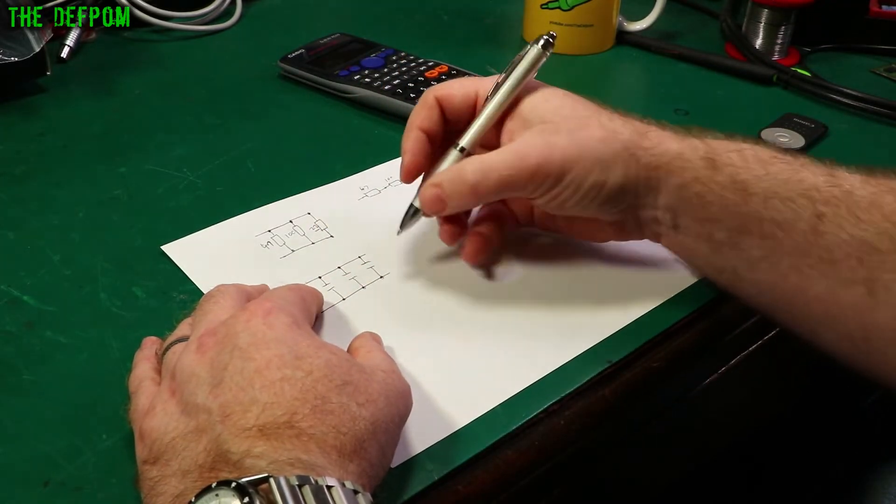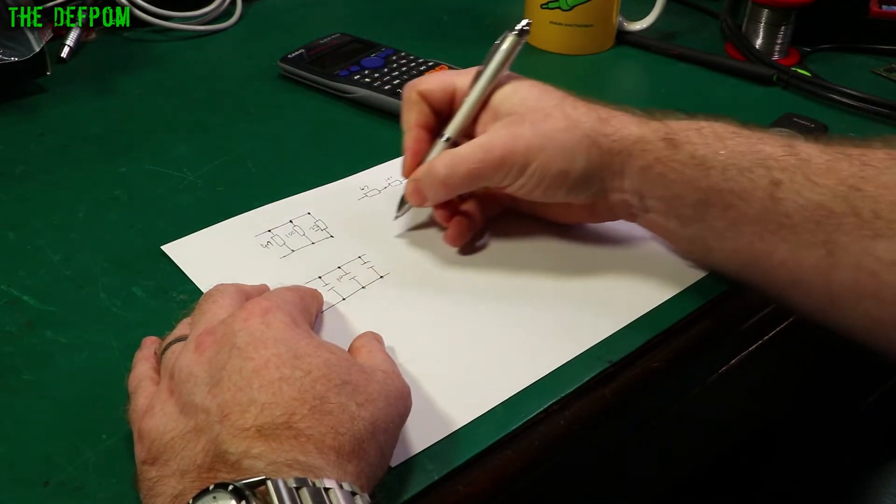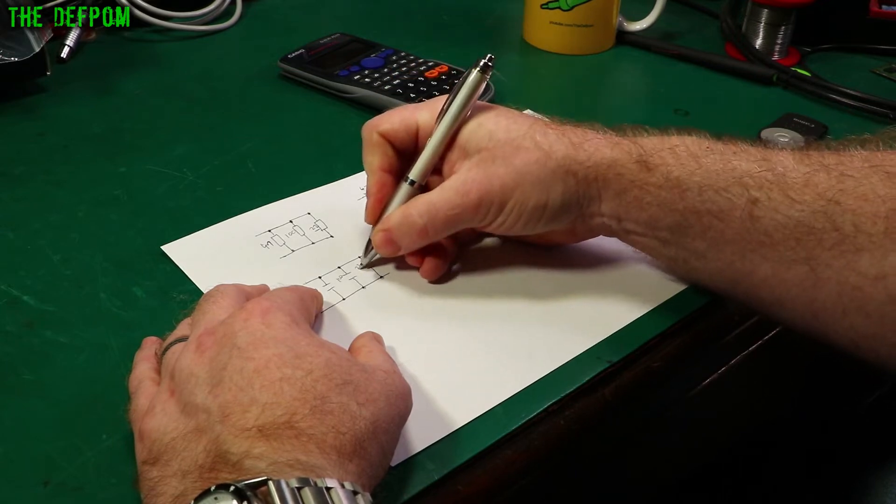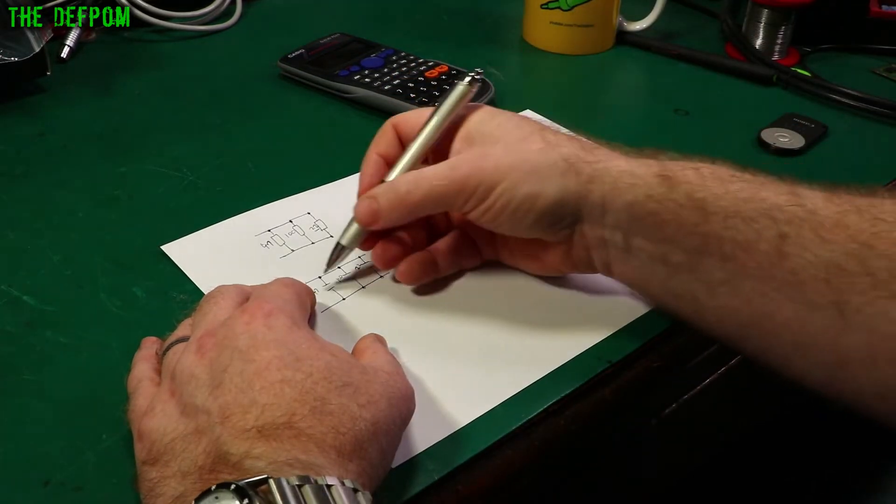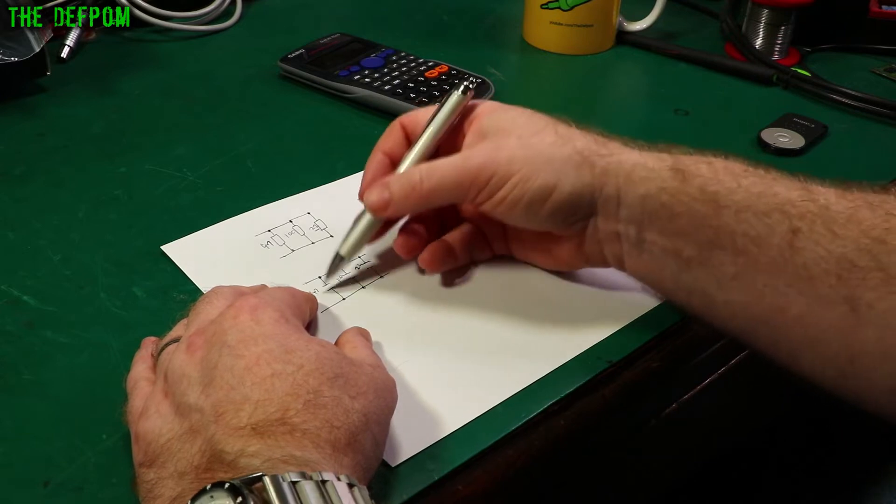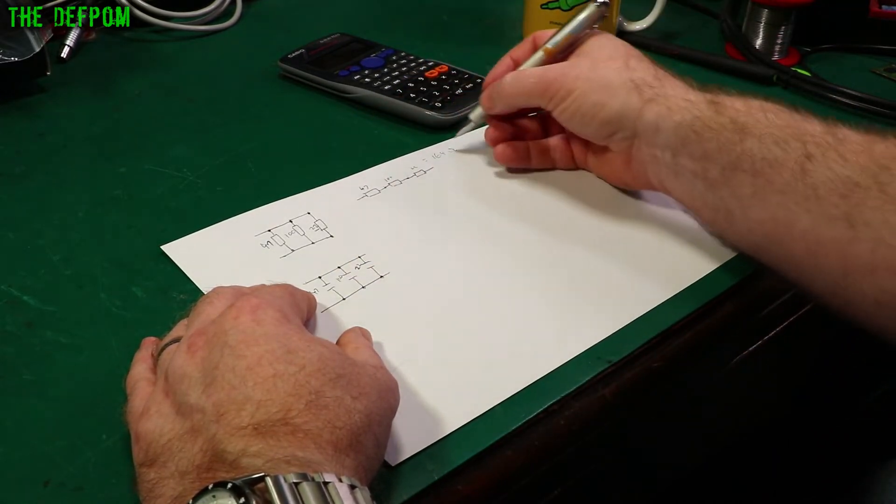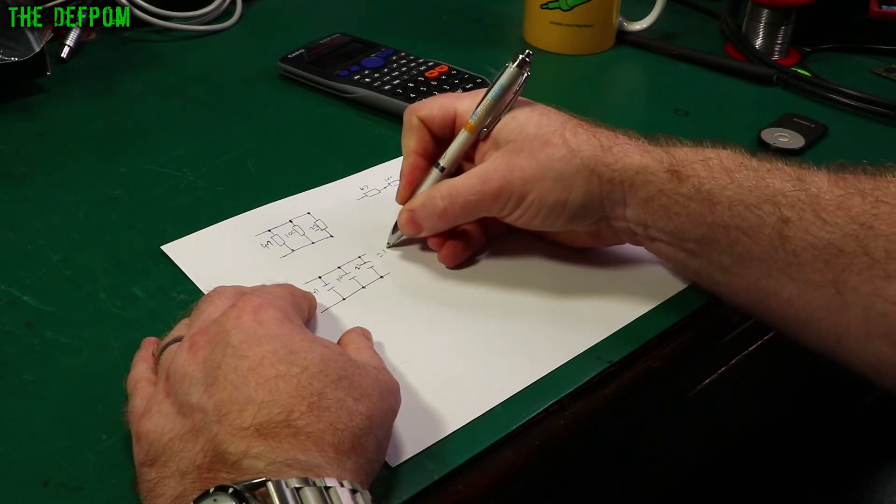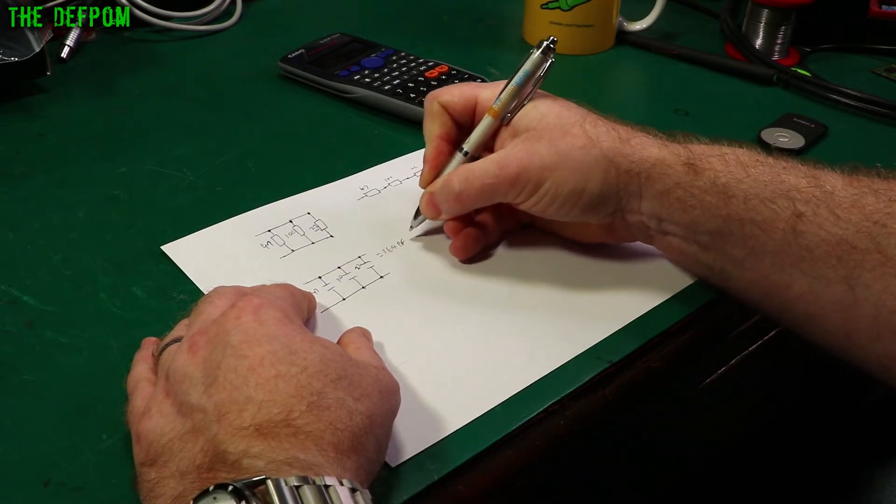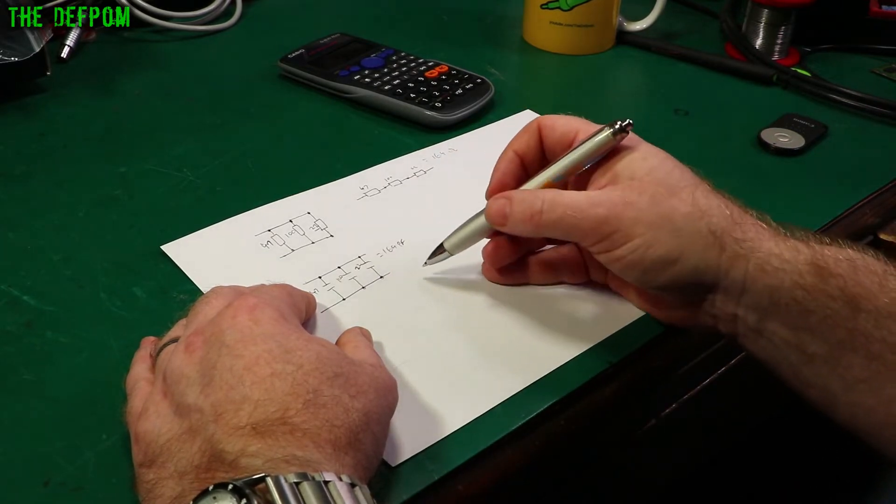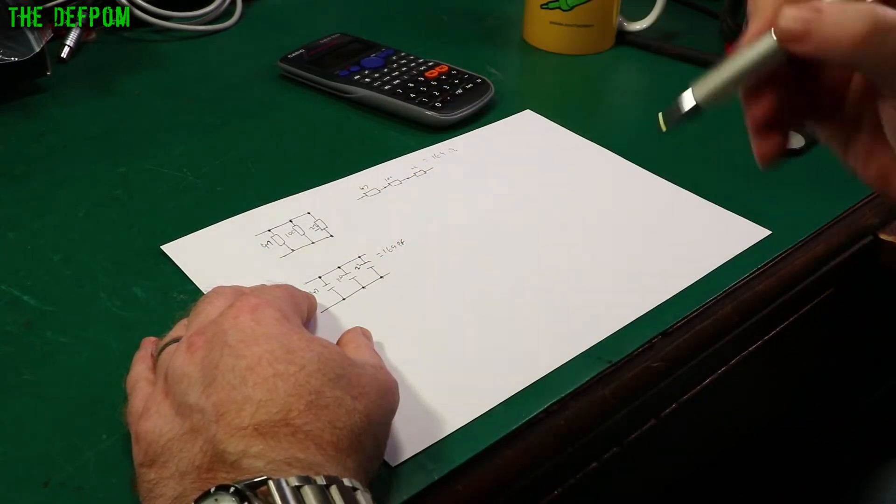47 picofarad, 100 picofarad and 22 picofarad. These are the same values. Now in this situation these are capacitors. So in this it's different to this. Now you add them together. So this will give you 169. So that will equal 169 picofarad. Easy. Adding capacitors in parallel is easy. Adding resistors in parallel is not so easy.